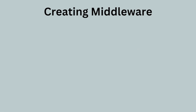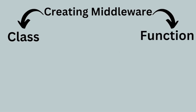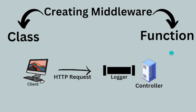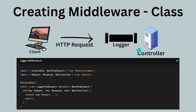There are two main types of middlewares, or two ways to create a middleware. One way is through a class and the other is through a function. We will learn this by going through the example of a logger middleware — we will create this logger both as a class middleware and as a functional middleware.